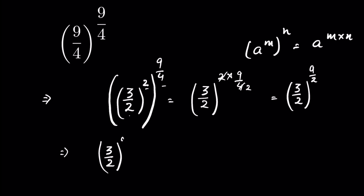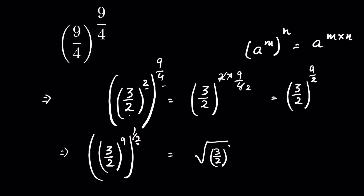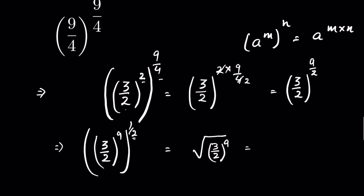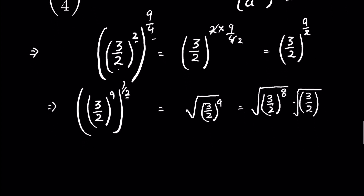Or this is (3 upon 2) whole to the power 9, multiplied by 1 upon 2, whole to the power. Now 1 upon 2 means square root, so we can write it as the square root of (3 upon 2) whole to the power 9. Or you can write it as the square root of (3 upon 2) to the power 8, multiplied by (3 upon 2) under square root.